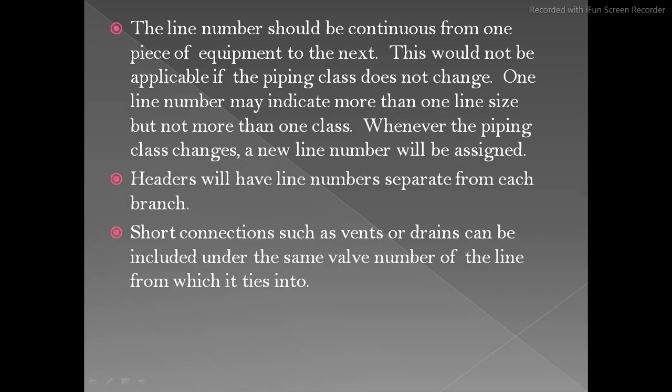The line number represents connectivity between equipments. This would not be applicable if the piping class does not change. One line number may indicate more than one line size, but not more than one class. Whenever the piping class changes, a new line number will be assigned.